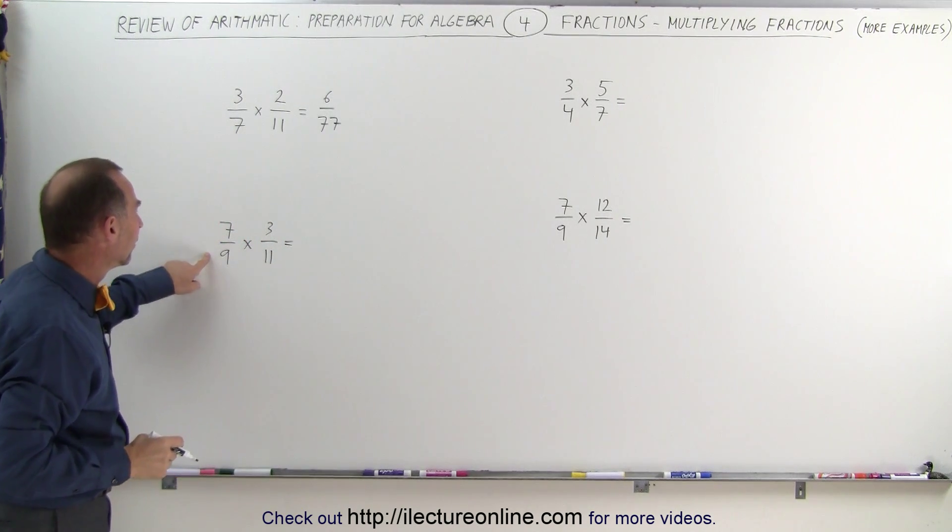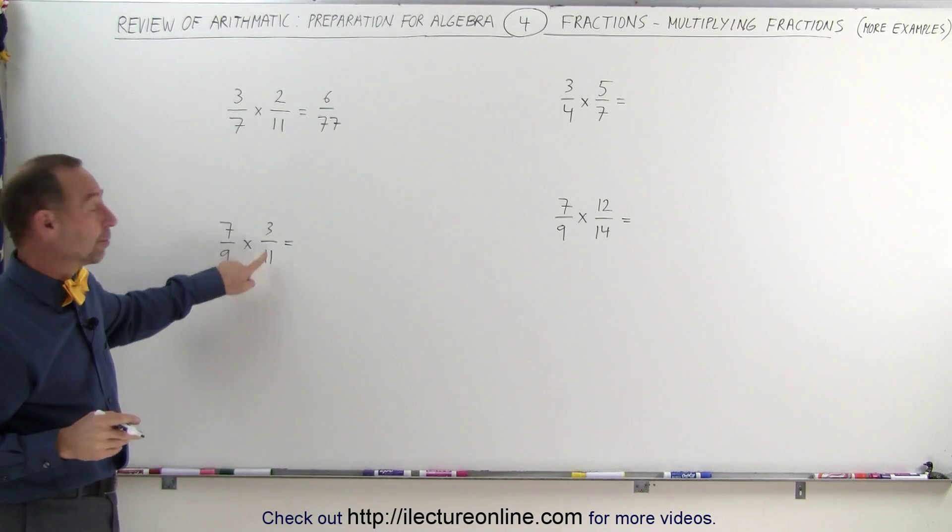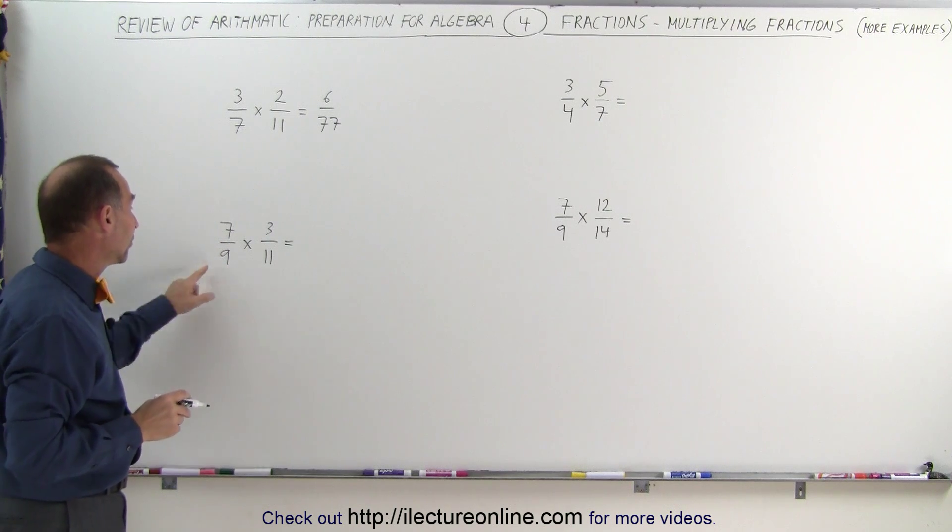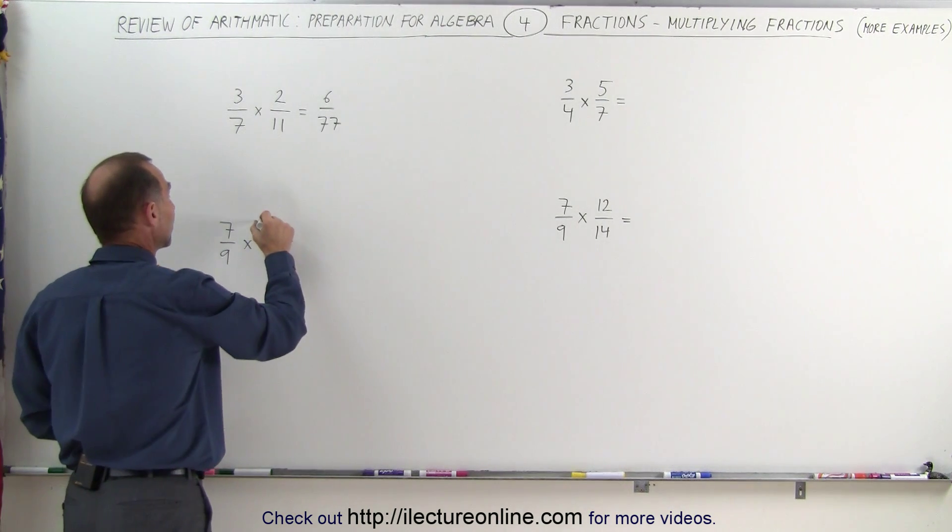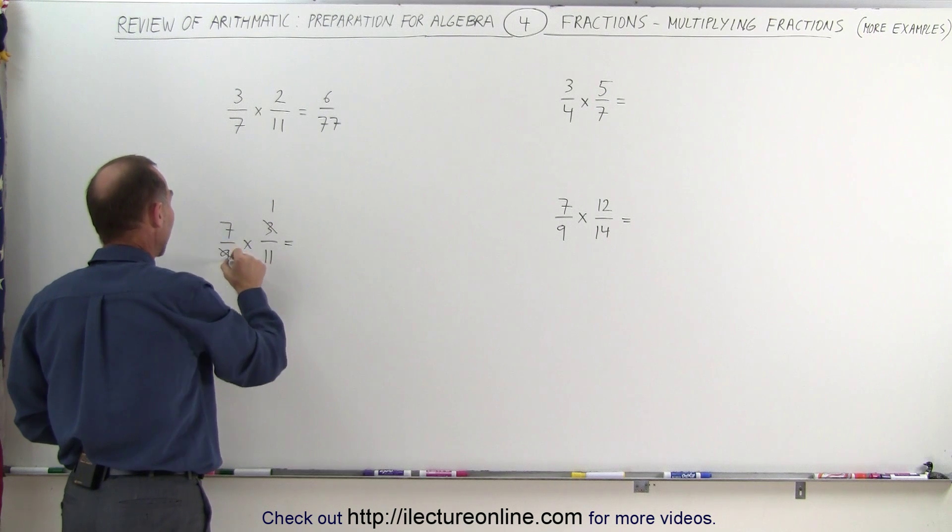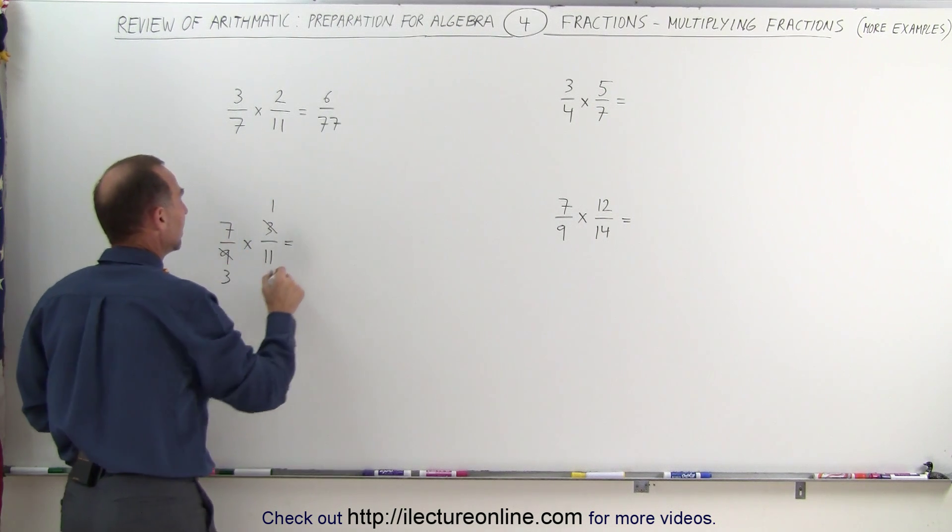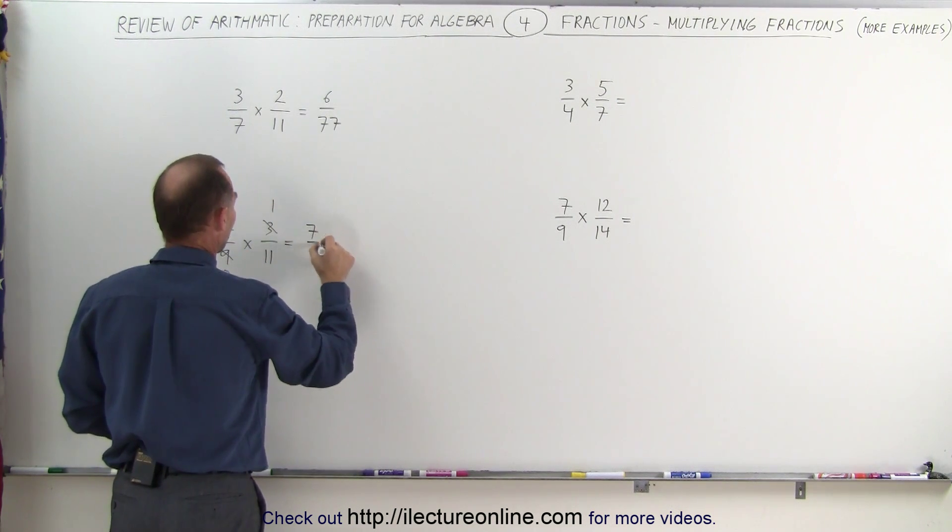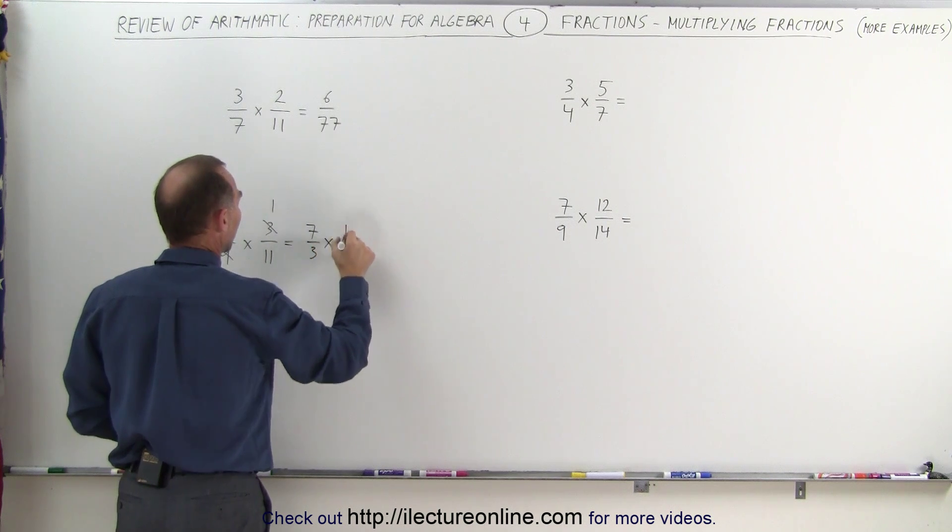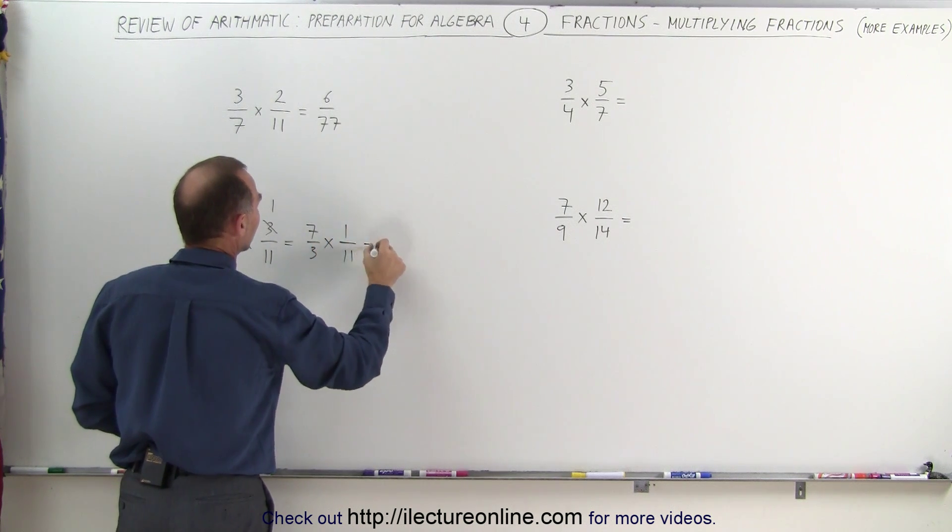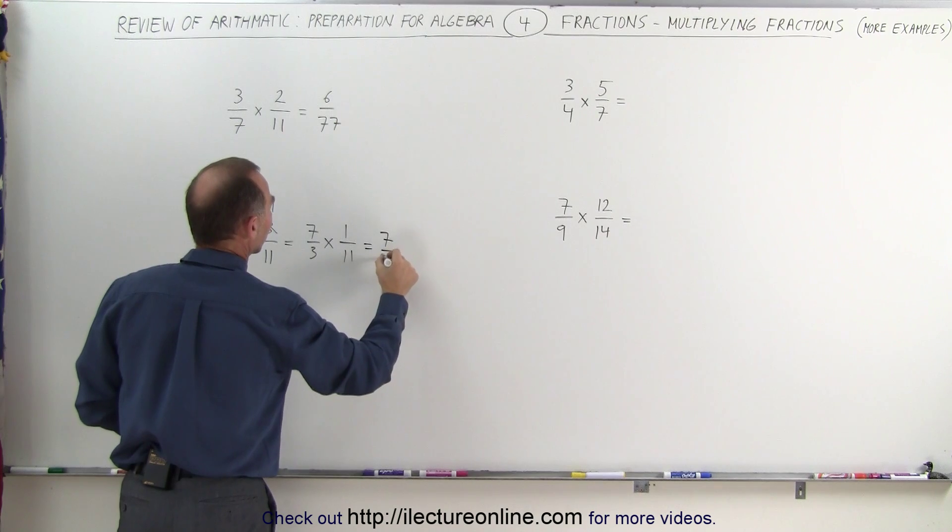Over here, 7 and 11 are prime numbers, but 3 and 9 are not. 3 and 9 are both divisible by 3, which means 3 divided by 3 is equal to 1, 9 divided by 3 is equal to 3. This leaves us with 7 thirds multiplied times 1 over 11, which is equal to 7 divided by 33.